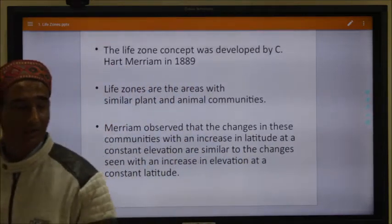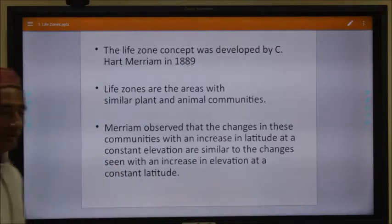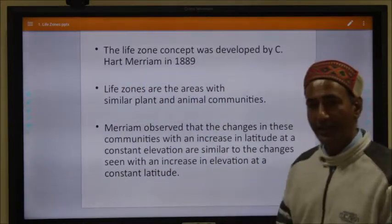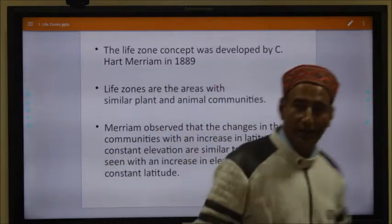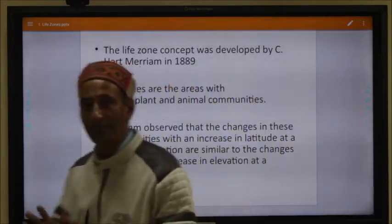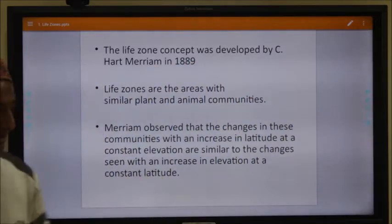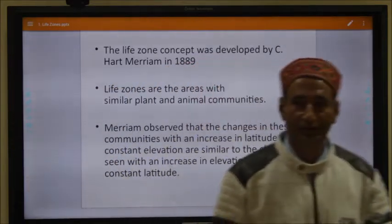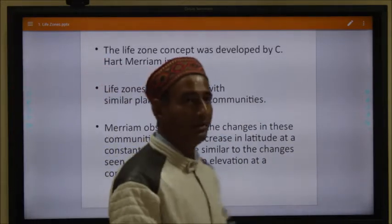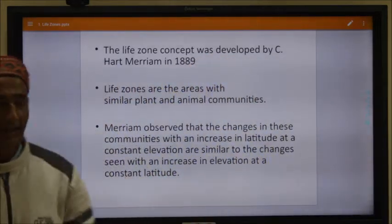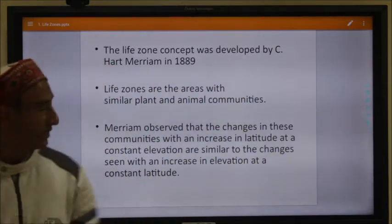The concept of life zones was first proposed by Hart Merriam in 1889. It was then decided to incorporate all areas having similar plant and animal communities into a similar group — these groups are called life zones. Life zones are areas which have similar plant and animal communities, irrespective of where they are present. For example, Arctic and polar regions show similarity in plants and animals with mountain regions like the Himalayas that also have extreme low temperatures.